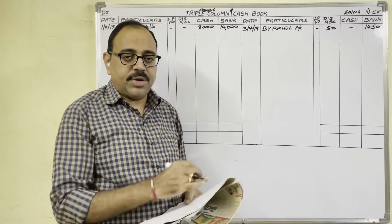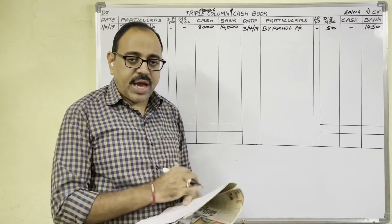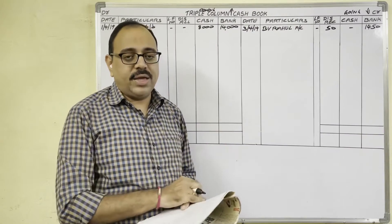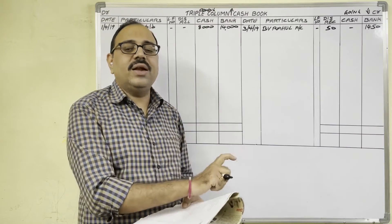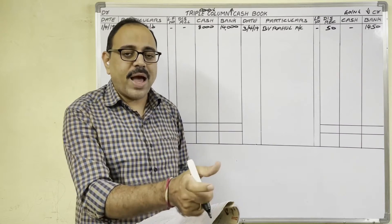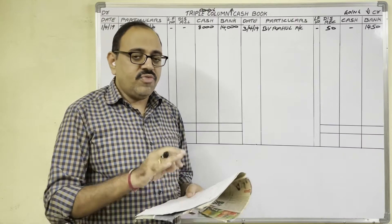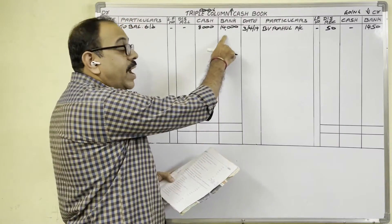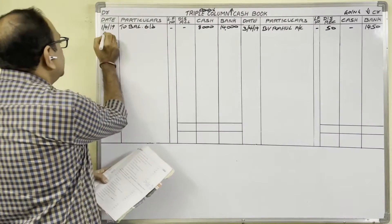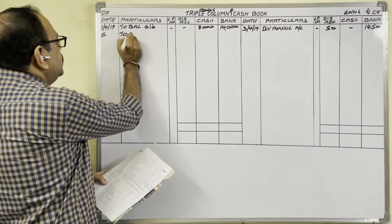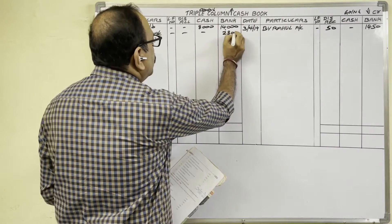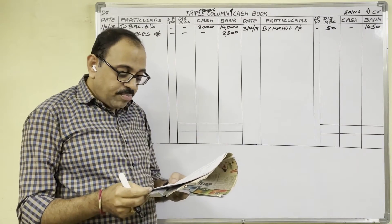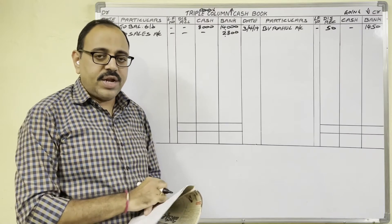6th April: Debt sales through net banking — 2,800 rupees. The firm sold goods to a customer; the customer paid through net banking, meaning money was directly transferred from the customer's bank account to our bank account. After this transaction our bank balance increases, so on the debit side bank column we write: 6th date, To Sales Account, 2,800 rupees in the bank column.